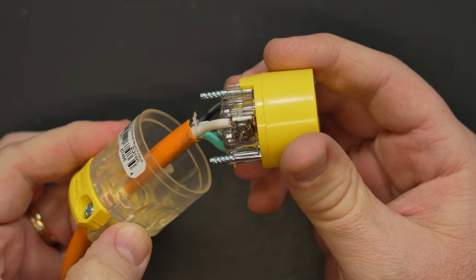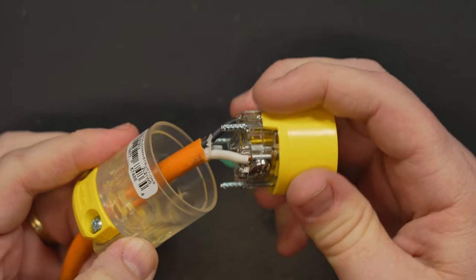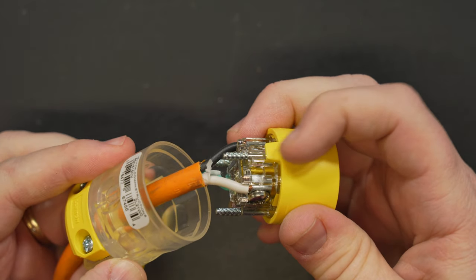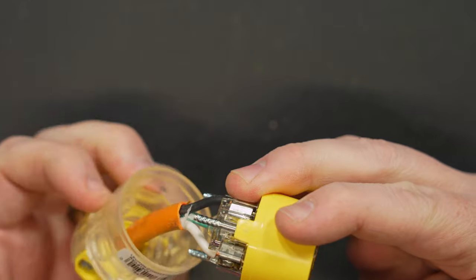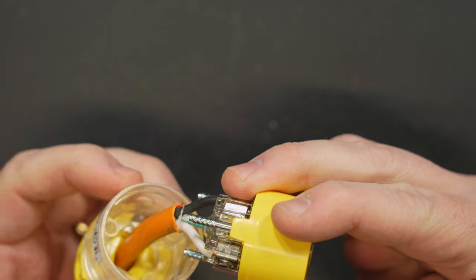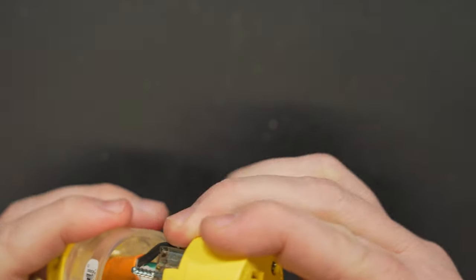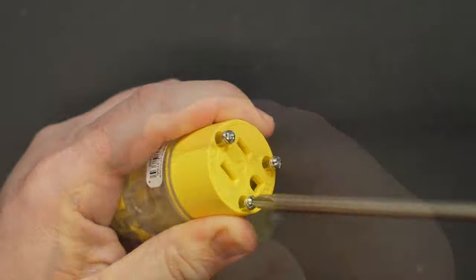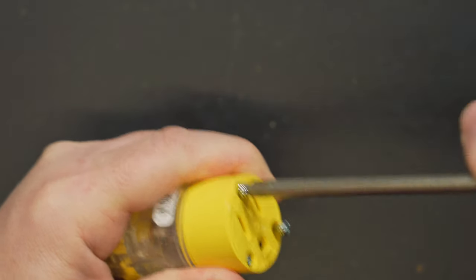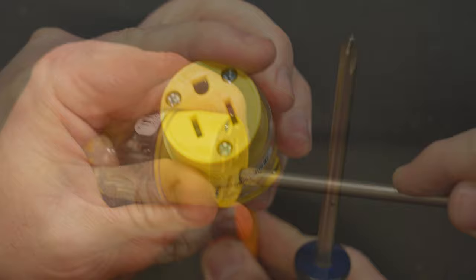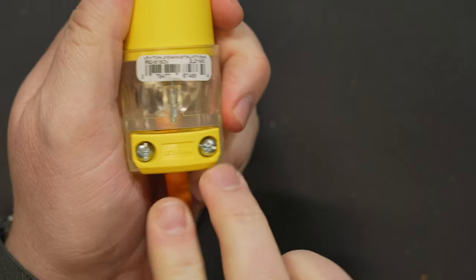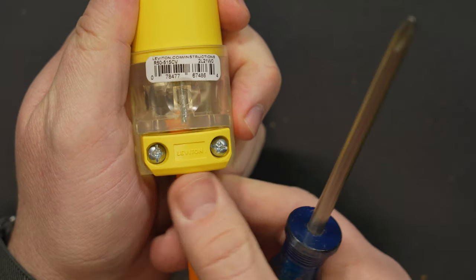So now that the wiring connections are finished we can reassemble the body of the plug. You can see it's got this little section here that's a little longer, a little ear there. As you rotate this around you'll see there's a cutout that that slots into. So just line things up properly and then your screw holes will all fit just like they're supposed to.